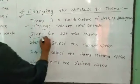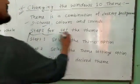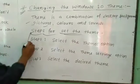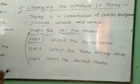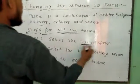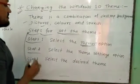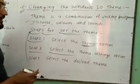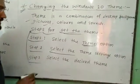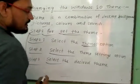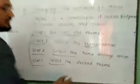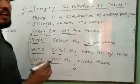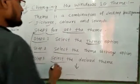We follow these steps for setting the theme in Windows 10. Step 1: Select the theme option. Step 2: Select the theme setting option. Then select the desired theme. Many themes are available here and we can select any one theme for setting.